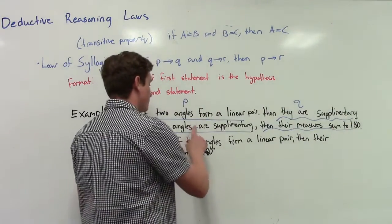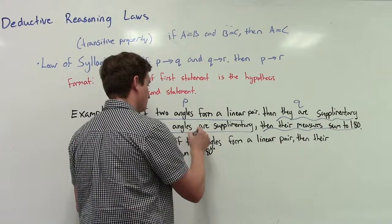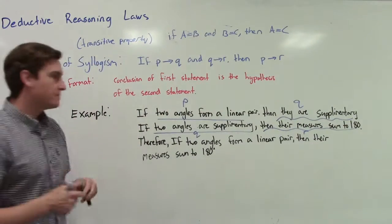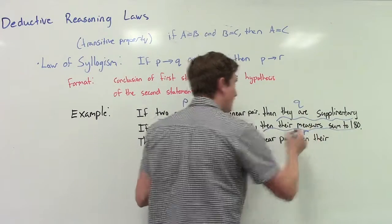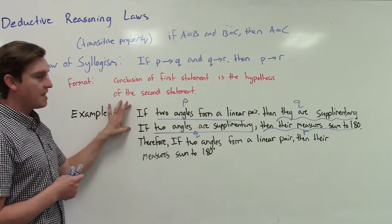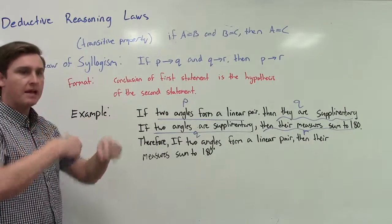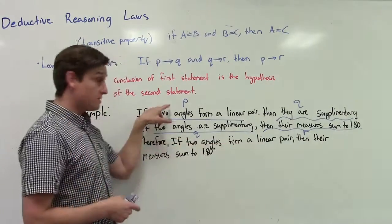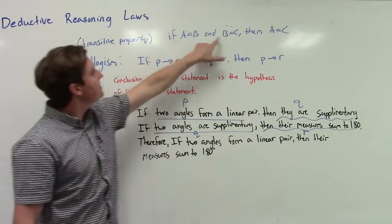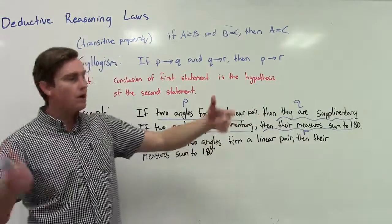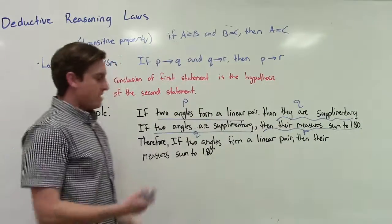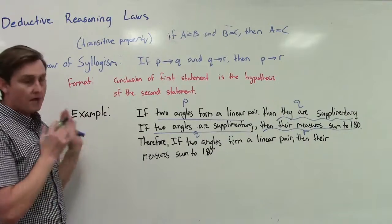The new part — their measures sum to 180 — we haven't seen that yet, so we call it r, the next letter after p and q. Now we have three: p, q, and r. The final statement is where it comes together, putting the two conditional statements together and skipping the middleman. The conclusion is: if two angles form a linear pair (p), then they sum to 180 (r) — we skip q altogether.